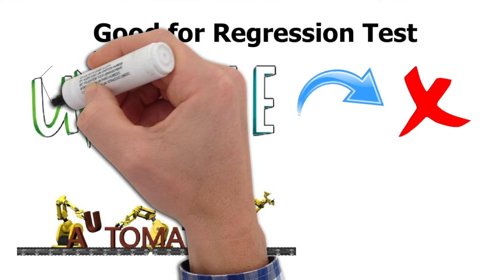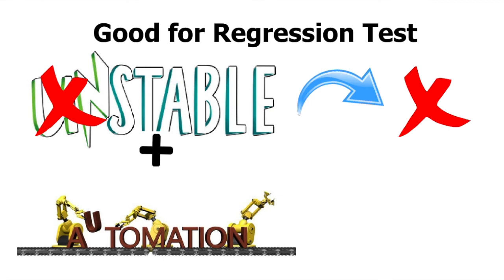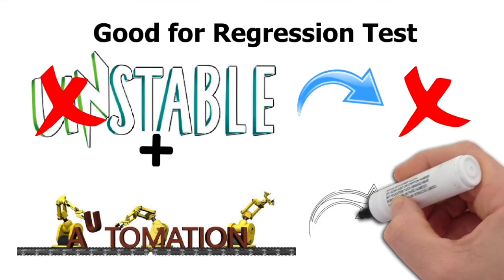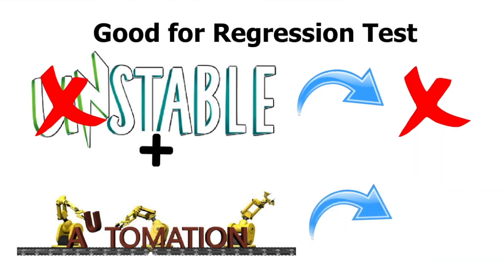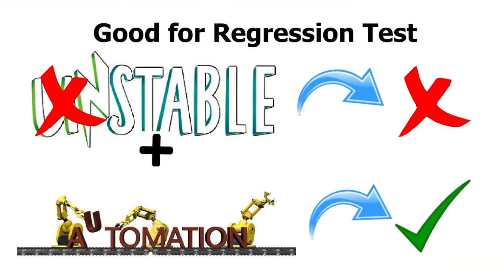When testers want to do automation, they should target a stable system. Once system integration testing is complete and you have a stable system with a set of test cases that were previously executed manually, those cases can now be executed very quickly using an automated regression pack. Automation helps organizations cut effort and cost significantly when doing regression testing on stable systems.